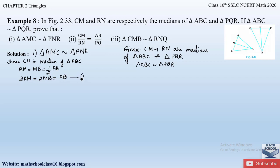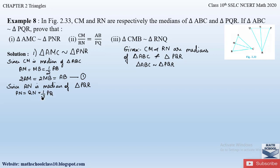Similarly, since RN is the median of triangle PQR, we can write PN = QN = PQ/2, or equivalently 2·PN = 2·QN = PQ. Let this be equation number 2.